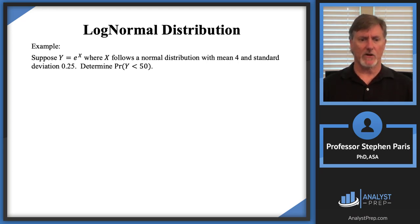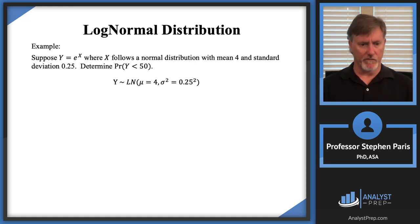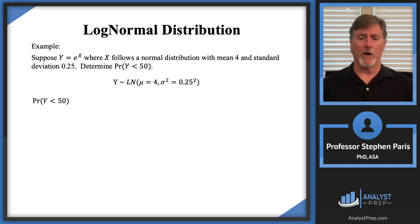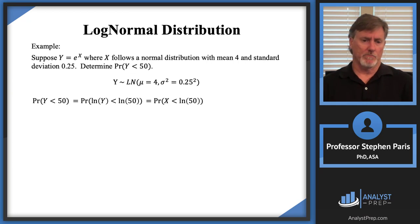Let's look at a final example. Suppose Y = e^X where X follows a normal distribution with mean 4 and standard deviation 0.25. We seek P(Y < 50). Since Y = e^X, Y follows a log-normal distribution with μ = 4 and σ² = 0.25² = 0.0625. Taking the ln of both sides: P(ln(Y) < ln(50)), and since ln(Y) = X, we need P(X < ln(50)).